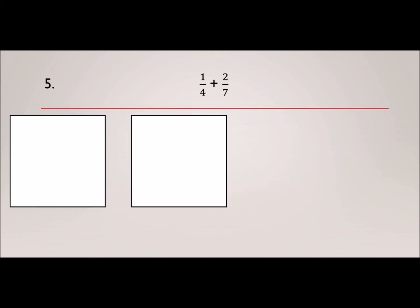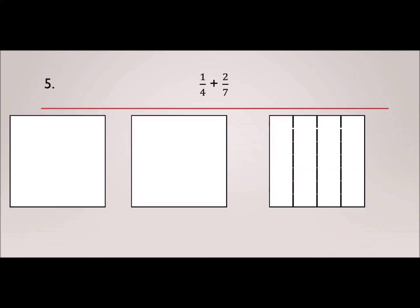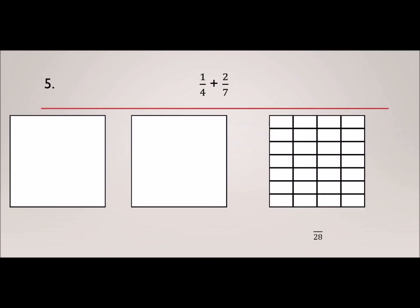Let's try number five: 1/4 plus 2/7. Pause the video and work on it. The first box has 4 parts divided with 1 shaded, and the second box has 7 parts with 2 shaded. The total number of boxes together should be 28. The first box should have 7 pieces shaded and the second box should have 8 pieces shaded. So 7 plus 8 gives us 15 out of 28.